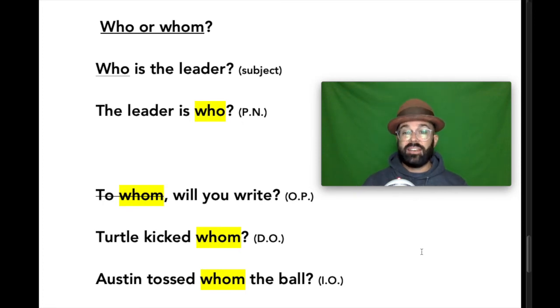But for whom, in the example, to whom will you write? To whom is a prepositional phrase. And so we have to use an objective pronoun as the object of the preposition. To whom. Or turtle kicked whom? Whom is behaving as a direct object in this sentence. Receiving the action of the kick. Or Austin tossed whom the ball? Whom is behaving as an indirect object. Receiving the direct object, ball.